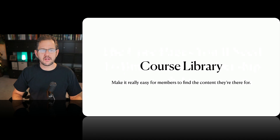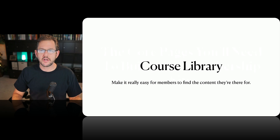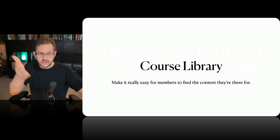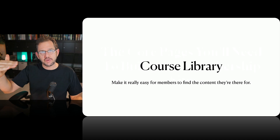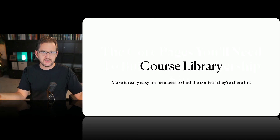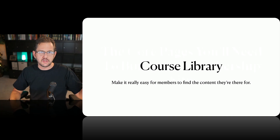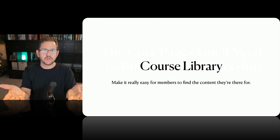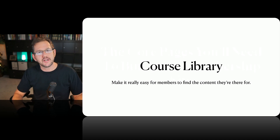Next up is the course library — this depends on whether you're going to have online courses in your membership, and not all of them do. If you have online courses or training content, you'll want a course dashboard where members can view all available courses. What I usually do is create a page and use the LearnDash course grid — an additional plugin from LearnDash — which provides a Gutenberg block you can use to list out all your courses. Make sure this page is easy for members to find.